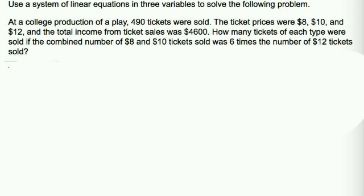Use a system of linear equations in 3 variables to solve the following problem. At the college production of a play, 490 tickets were sold. The ticket prices were $8, $10, and $12, and the total income from ticket sales was $4,600. How many tickets of each type were sold, if the combined number of $8 and $10 tickets sold was 6 times the number of $12 tickets sold?